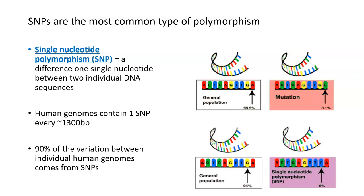What we care about in terms of GWAS are the single nucleotide polymorphisms, or SNPs. A SNP is a difference of one single nucleotide — one single base pair at one specific genetic location — between two individuals. Human genomes have a lot of SNPs, probably about one SNP every 1,300 base pairs. So every 1,300 nucleotides, there is a difference in your genome compared to the person sitting next to you, or your mom, dad, or brother. About 90 percent of the variation we see between individual human genomes comes from these SNPs.